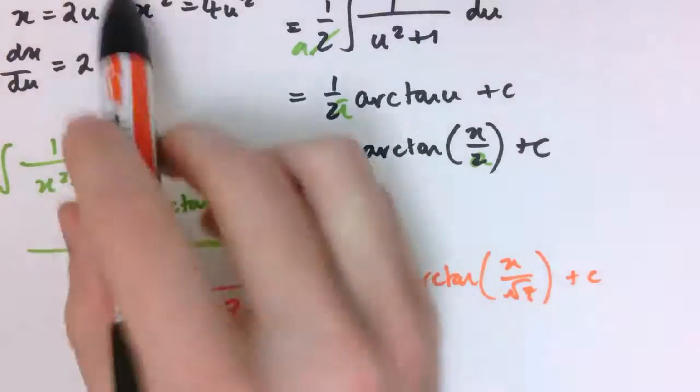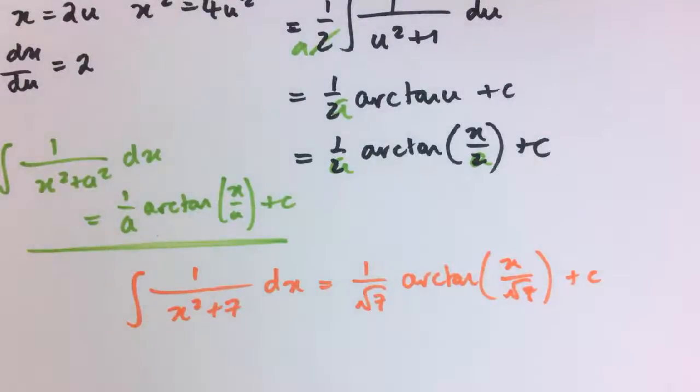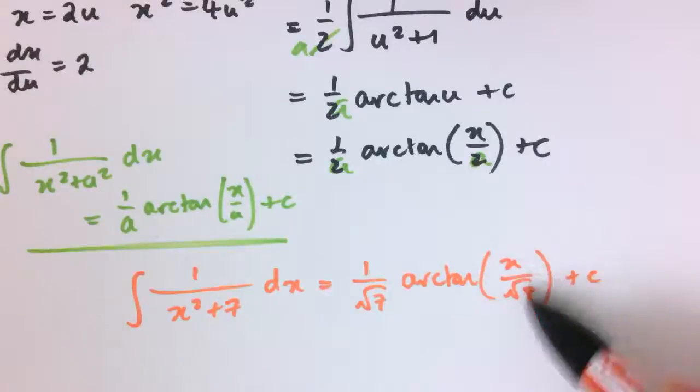And it's just worth noticing that, although I've used a squared in the formula here, it doesn't have to be an exact square number, I could have 1 over x squared plus 7 as well, and the same result would give me that this integral is 1 over the square root of 7 arctan x over the square root of 7 plus c.